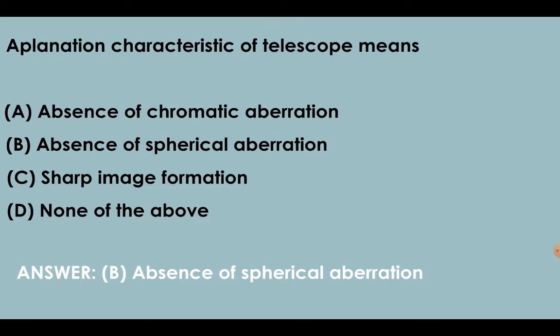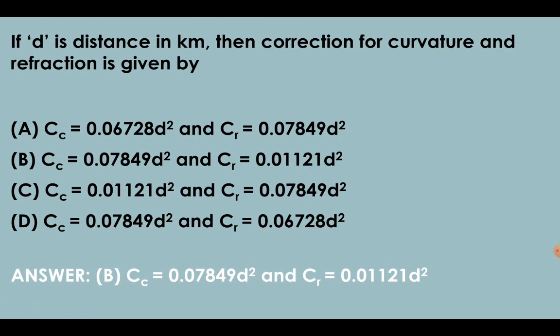Aplanatic characteristic of telescope means absence of spherical aberration. If d is the distance in kilometers, then correction for curvature is given by Cc = 0.07849 d² and correction for refraction is given by Cr = 0.01121 d².